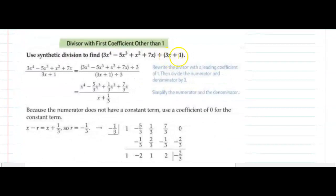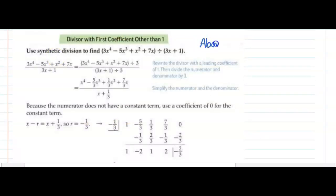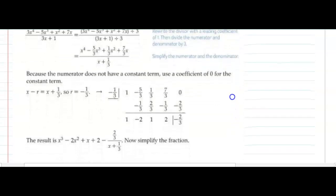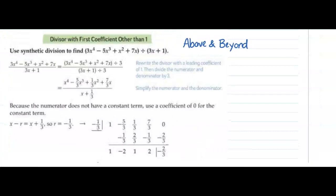Now, synthetic division — you're probably really loving it and thinking: why can't we just do it all the time? Well, what happens when that x term has a coefficient and it's not just x plus 1 — what if it's 3x plus 1? You're going to have to compensate for it and it gets a little hairy. So we're calling this above and beyond material. It will not be part of our assessments; we will not put problems where the divisor has a first coefficient other than 1. If you'd like to practice, you can go to page 246 in our book.